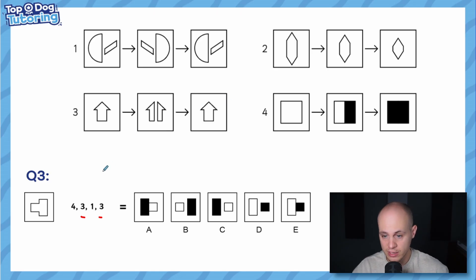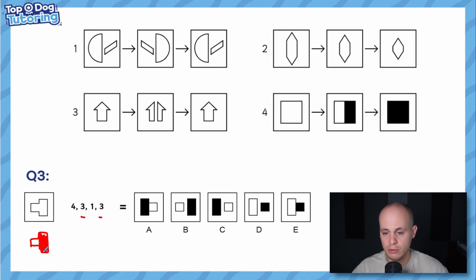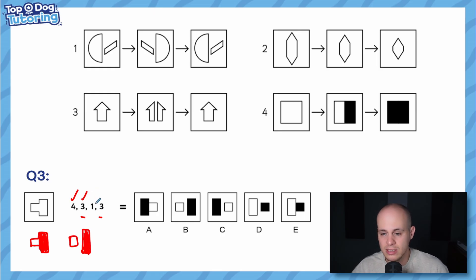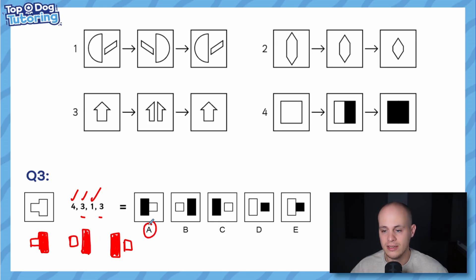Don't jump ahead and do both threes first — do it in order. Four comes first, so shade the right-hand side black. Sketching it out: after four, then three splits it. Three appears again but keep going in order. Number one flips the image, so the black half is now on the left. Then three combines it back together again, giving answer A. Sketching things out is highly recommended.